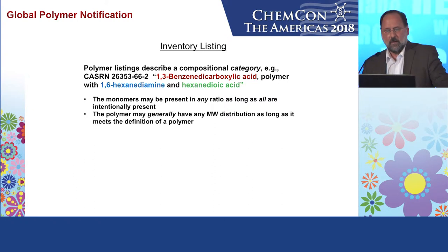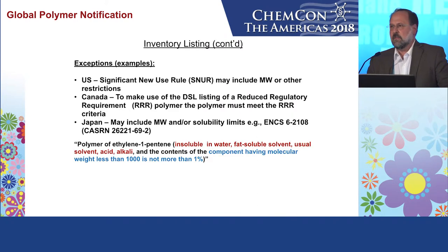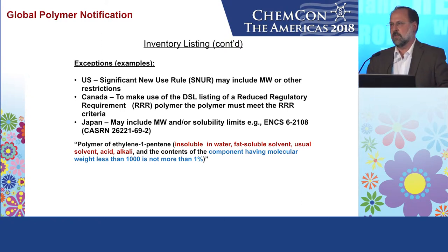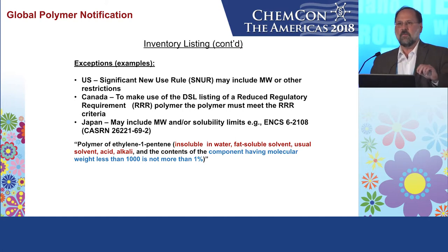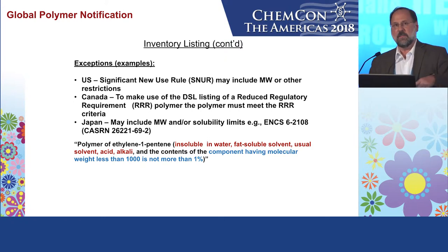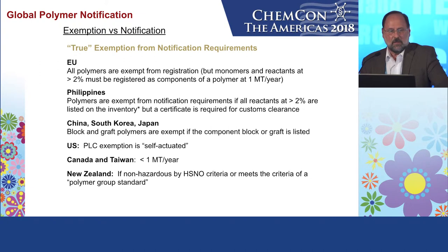However, there can be exceptions. In the US, if the inventory listing includes an SNR, that could include molecular weight restrictions or other restrictions for that polymer. In Canada, to use a DSL listing for a reduced regulatory requirement polymer — that's their polymer of low concern — you must meet those requirements. If you find your polymer's CAS number on the Canada inventory, celebrate, but if it has the triple-R flag, some work needs to be done. Inventory listings are great, but pay attention to the details.